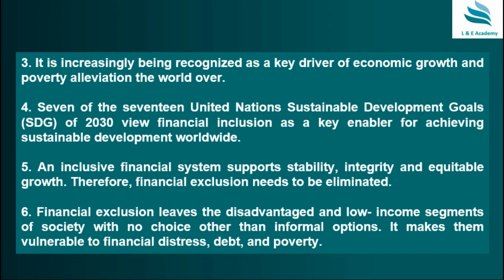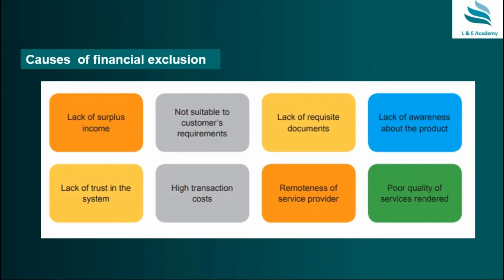What are the causes of financial exclusion? First, lack of surplus income — people who do not have surplus income mostly do not require banking services because whatever they earn, they consume. Second, banking services are not suitable to poor people's requirements. Third, lack of requisite documents — most of the time, poor people and farmers don't have documents as identity proof or address proof to open an account.